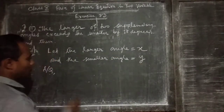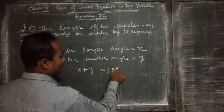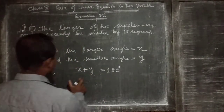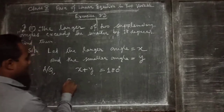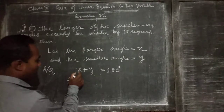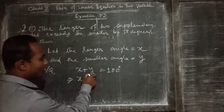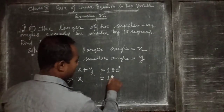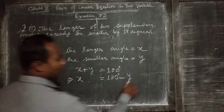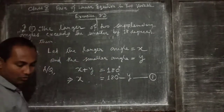The first condition given is that these two angles are supplementary. Supplementary means the sum of the angles should be equal to 180 degrees. The angles are x and y, so we write x plus y equals 180 degrees. According to the substitution method, we first find out the value of one variable. Here we find x, so we shift y to the right side and get x equals 180 minus y. We label this as equation number 1.